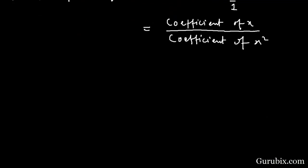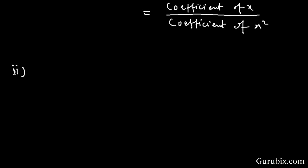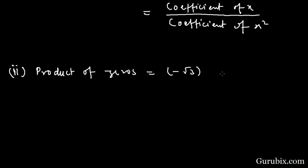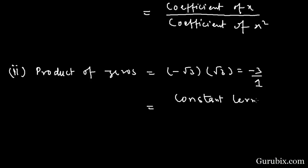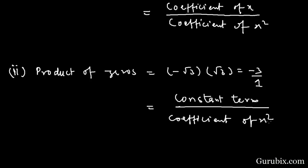Now we shall verify the product of zeros: minus root 3 into positive root 3 equals minus 3. We can write it as minus 3 over 1, and this ratio equals the constant term over the coefficient of x squared. Hence both relationships are verified. This is the solution of the example. Thank you.